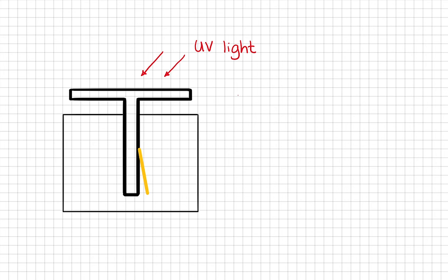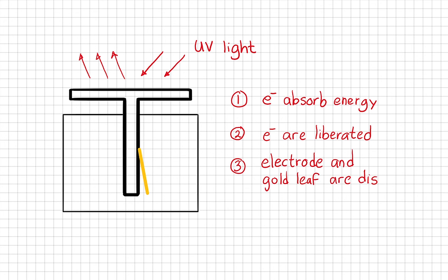The implication here is that electrons on the metal plate absorb energy from the light source and become liberated or freed from the metal plate. In this process, the electrons in the electrode and gold leaf also get discharged.